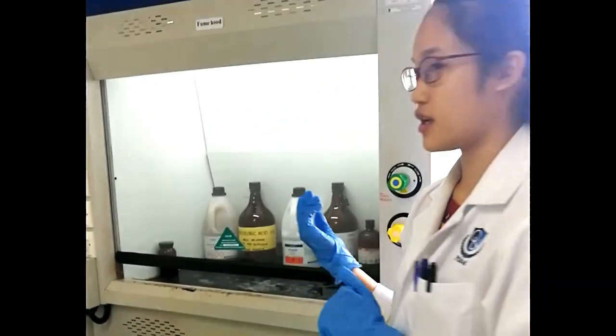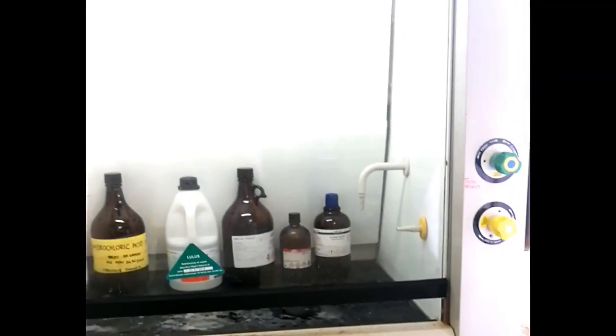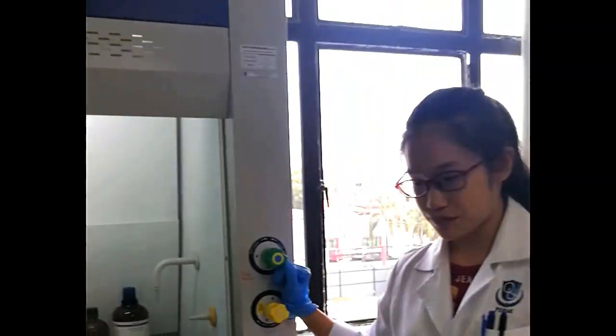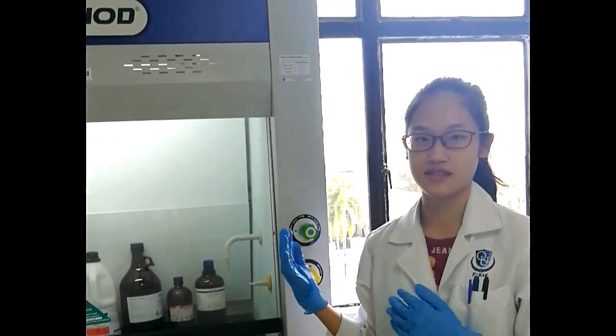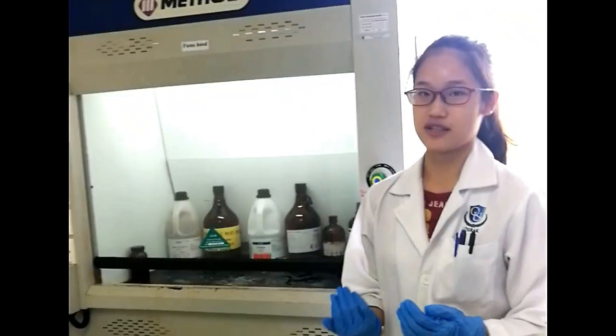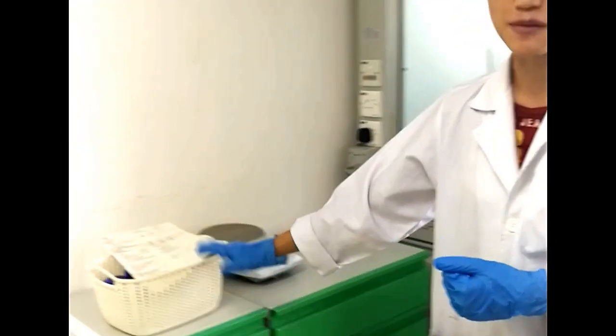So now I'm doing DNA extraction. Now I'm preparing the reagents. So I'm using the fume hood because I'm dealing with hazardous chemicals. And after that, I will extract the DNA from the Rhizobia using all the reagents that I have prepared now.